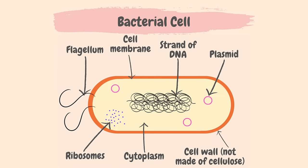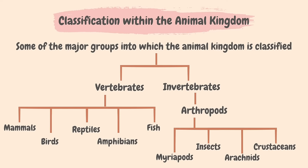Now that we know something about the five kingdoms, let's dive into the animal kingdom and learn how organisms within it can be further classified. Two major groups are vertebrates and invertebrates. Vertebrates can be further divided into mammals, birds, reptiles, amphibians and fish. Invertebrates can be further classified into myriapods, insects, arachnids and crustaceans.